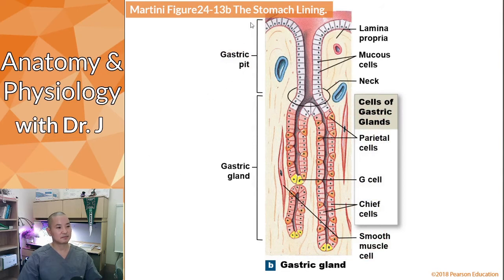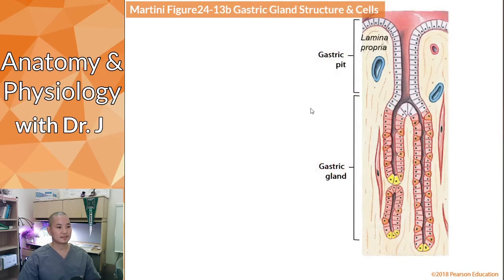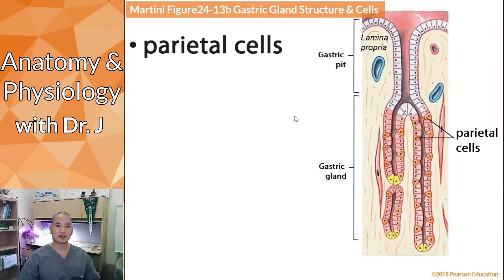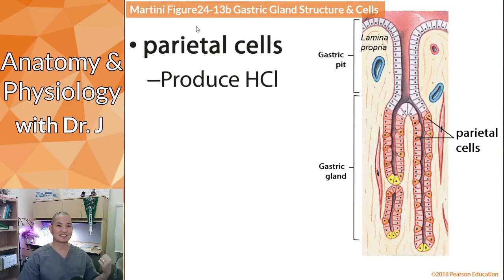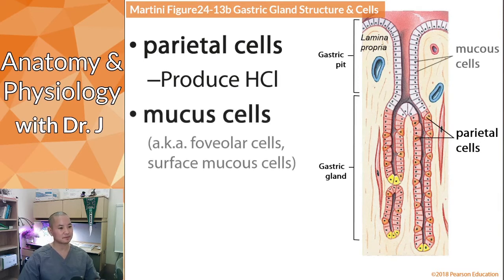Looking closer at the gastric pits, we can see they open toward the inside of the stomach and contain several different cell types. Parietal cells are very important because they produce HCl, or hydrochloric acid, which is involved in chemical digestion. Hydrochloric acid is on the extreme acidic end of the pH scale, and gastric acid typically has a pH of around one to three.